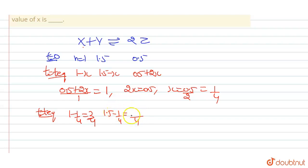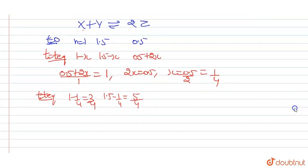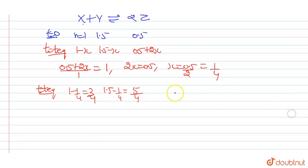Moles at equilibrium: moles of x is 1 minus 1 by 4, which equals 3 by 4. Moles of y is 1.5 minus 1 by 4, which equals 5 by 4. Moles of z at equilibrium: since concentration is given as one mole per liter and volume is one liter, moles of z equals 1.